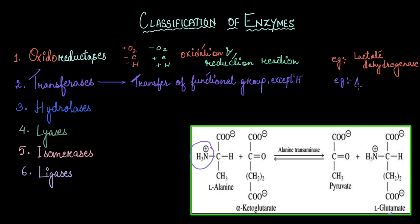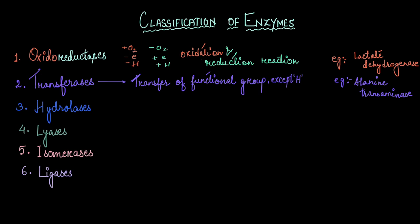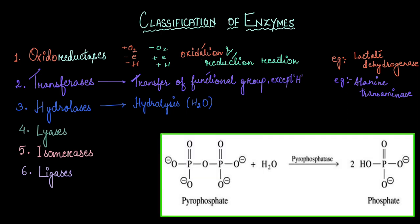Now the third class of enzyme is hydrolases. Again the name speaks for itself. Hydrolases house enzymes that do hydrolysis reactions, which means breaking down of a molecule in the presence of water. Here I have a pyrophosphate molecule which in the presence of water is broken down into two phosphate molecules.